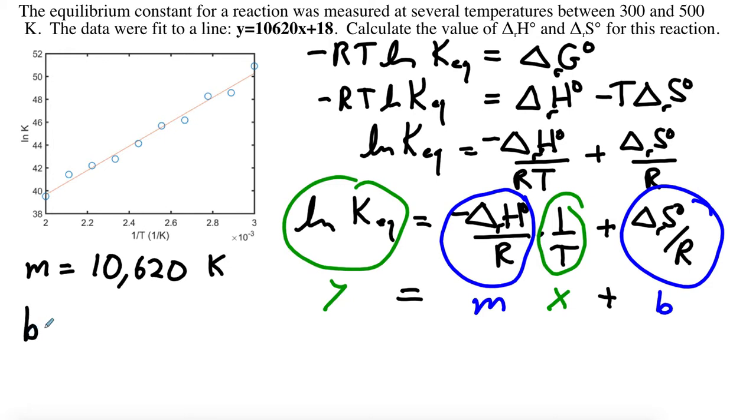Now let's look at the Y-intercept. The Y-intercept is given as 18 from a fit to this data. We need to write down the units on that. The Y-intercept always has the same units as the Y-axis, and that's unitless, so it's just going to be unitless.